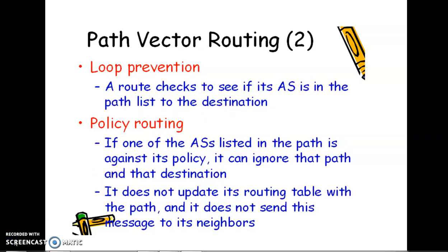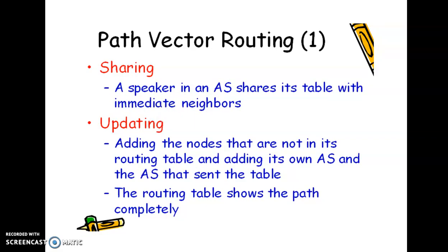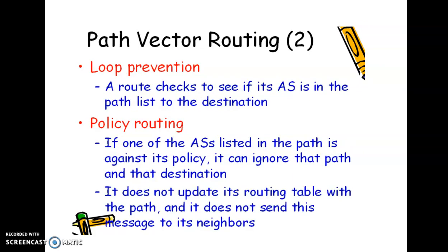The next characteristic is policy routing — to make sure that each and every path reaching the destination follows its policy. If one of the autonomous systems listed in the path is against its policy, it can ignore that path and does not update its routing table with that path, nor send this message to its neighbor. So path vector routing, before updating its routing table or sending it to the neighbor, makes sure all paths reaching the destination are within policy.